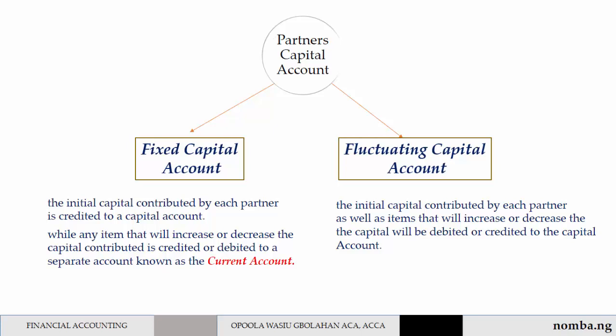Under the fixed capital account, the capital account only contains the capital that has been contributed initially by each partner. Any increase or decrease in that capital will be debited or credited to a separate account known as a current account. In the next video, we will look at the second item in the partnership agreement.